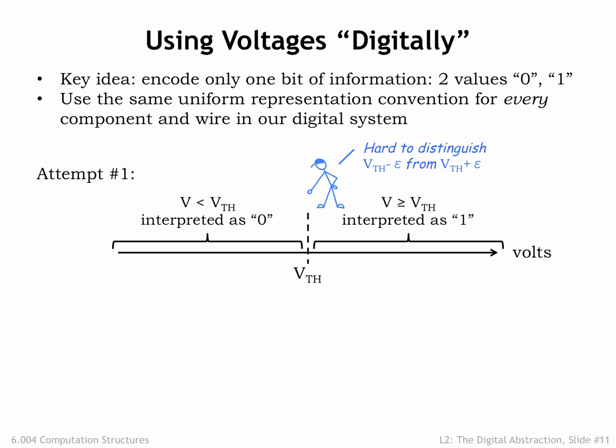The problematic part of this definition is the difficulty in interpreting voltages near the threshold. Given the numeric value for a particular voltage, it's easy to apply the rules and come up with a corresponding digital value. But determining the correct numeric value accurately gets more time-consuming and expensive as the voltage gets closer to the threshold. The circuits involved would have to be made of precision components and run in precisely controlled physical environments — hard to accomplish given the multitude of environments and modest cost expectations for the systems we want to build. So, although this definition has an appealing mathematical simplicity, it's not workable on practical grounds. This one gets a big red X.